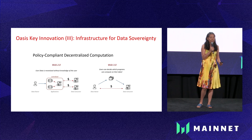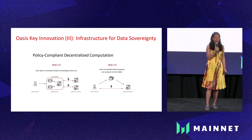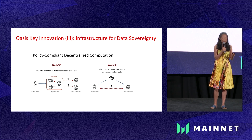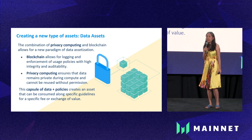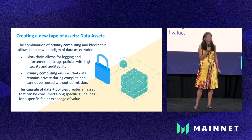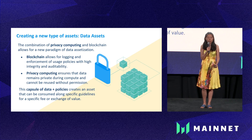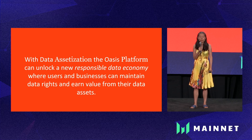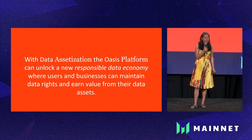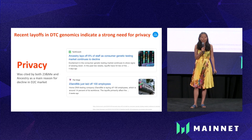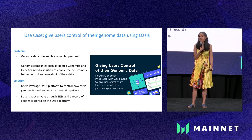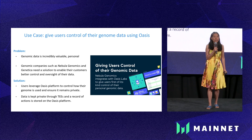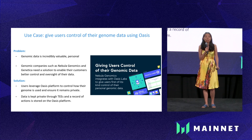The third key innovation for Oasis provides new infrastructure for data sovereignty. We enable a new paradigm called policy-compliant decentralized computation. Using Oasis technology, we combine blockchain and privacy computing to create a new type of asset we call data assets. With data assetization, the Oasis platform can unlock a new responsible data economy where users and businesses can maintain data rights and earn value from their data assets. We have applied this in genomic data use cases, helping users maintain control of their genomic data while still enabling it to be utilized in a privacy-preserving way.